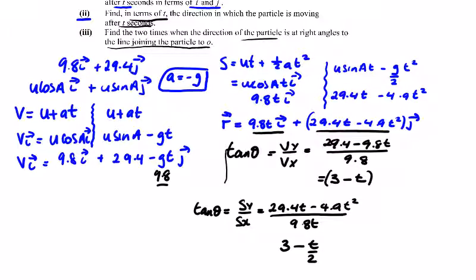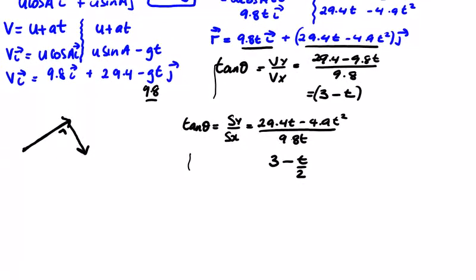We're asked to find the two times when the direction of the particle is at right angles. So we've got the tan of this, or the slope of this line, and at any time, the first one we got will be the slope of this line. They're at right angles to each other, so the product of these is minus 1. So 3 minus t times 3 minus t over 2 equals minus 1.